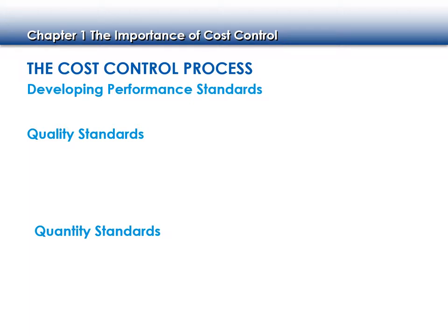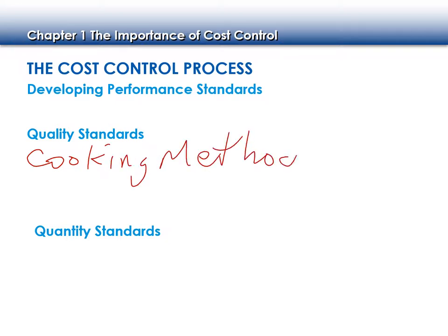We have two different types of standards: quality standards and quantity standards. Quality standards refer primarily to the cooking method and the quality of the ingredients themselves. If my recipe calls for green bell peppers, I need green bell peppers. Those are the quality standards.